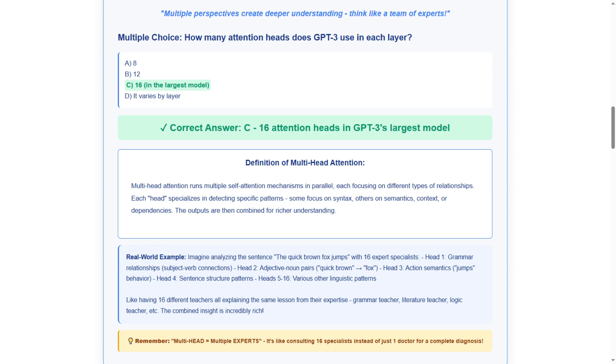Our real-time example demonstrates 16 specialists working on the quick brown fox jumps. Head 1 handles grammar, head 2 processes adjective-noun pairs, head 3 manages action semantics, and so on. This shows specialized parallel processing.